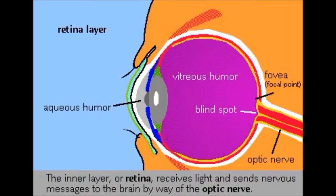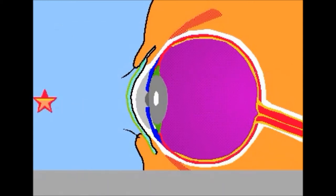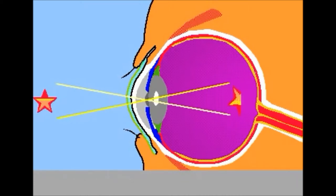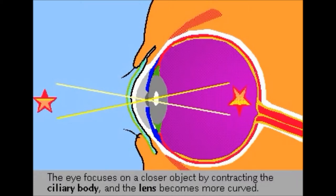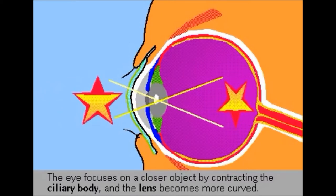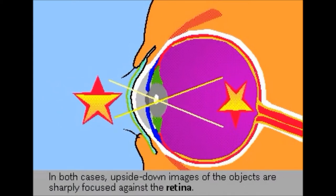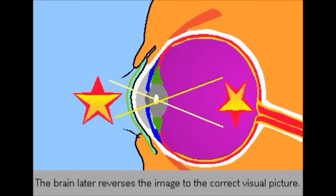The lens of the eye is elastic and its curvature can be changed by the ciliary body to focus on a particular object. To focus on a far object, the ciliary body relaxes and pulls the lens flat. To focus on a near object, the ciliary body contracts and the lens becomes more curved. In each case, the images are focused against the retina but are upside down. It is the brain that automatically reverses the image so that we perceive the correct visual image.